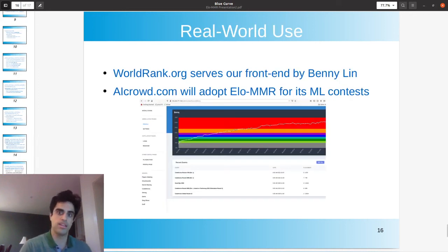So, finally, I'd like to highlight some real world use. Of course, this system is brand new, and we look forward to it seeing much more applications that maybe you guys will come up with. But one startup, AI Crowd, is already in talks with us and wants to use ELO-MMR to rate its users for its machine learning competitions. In addition, we've set up our own website, worldrank.org. The front end's by Benny Lin, so you can kind of see visualizations of ratings over time.